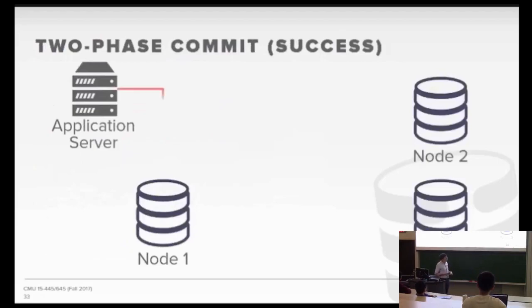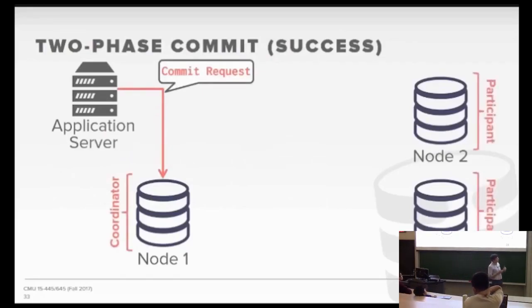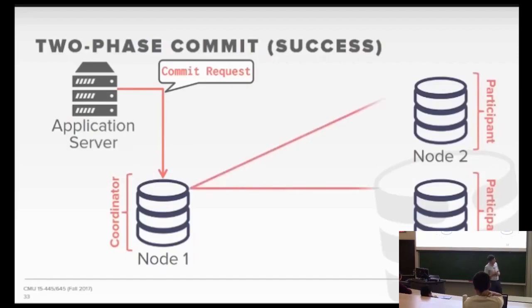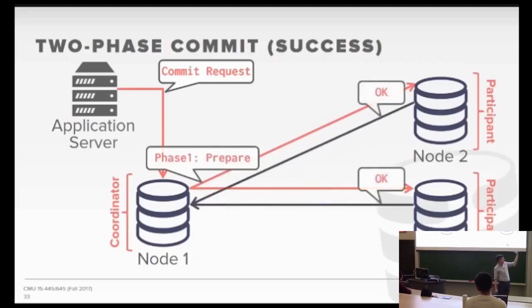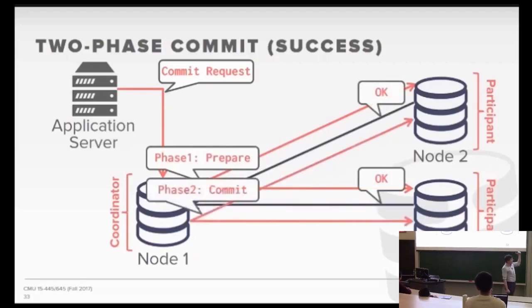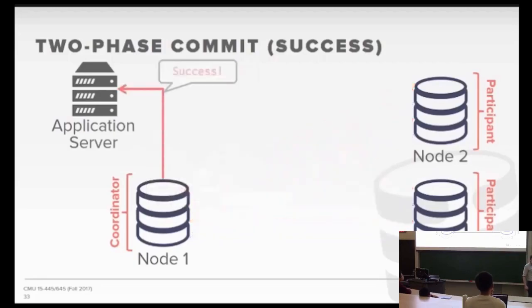The basic idea of two-phase commit is simple. The application says I want to commit. Whatever node you go to is considered the coordinator and everyone else is a participant. In the first phase, you say this transaction wants to commit — is that okay? They say yes. Then you go back and say, everyone agrees to commit, so go ahead. They commit and give back acknowledgements. Once you get back acknowledgements after the second phase, the transaction is considered fully committed, and you return the acknowledgement to the application server.